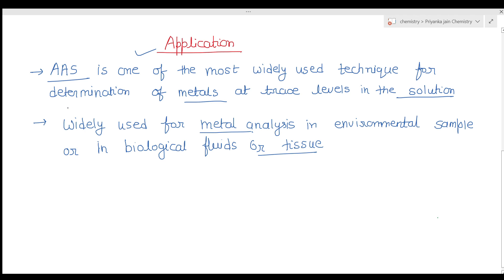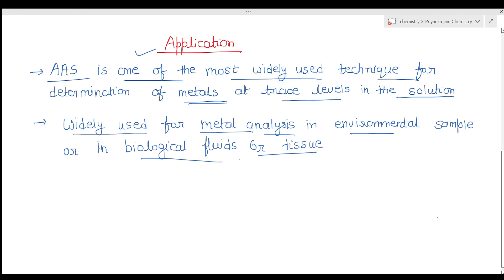Atomic absorption spectroscopy is one of the most widely used techniques for determination of metals at trace levels in solution. It is widely used for metal analysis in environmental samples — air, water, soil — as well as in biological materials and tissues. If you liked these lectures, please share them with other students and subscribe to the channel.